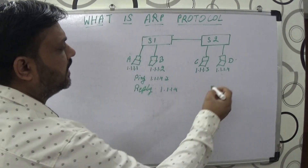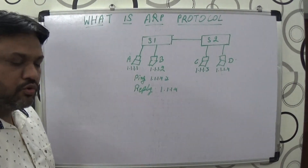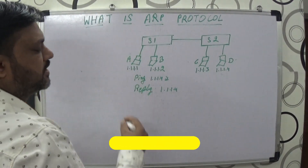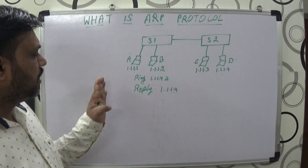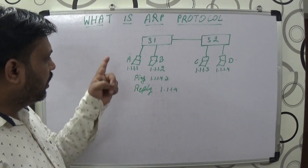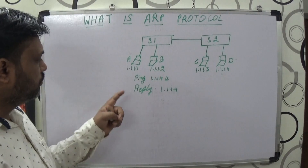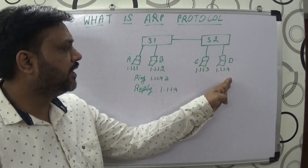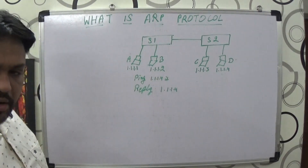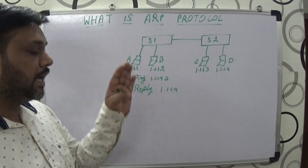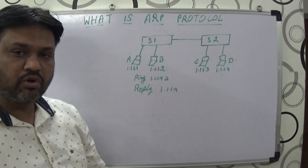But how does the ping command come to know about this computer? How does computer A or switch number one or switch number two know that the computer we are trying to reach is available on switch number two? Here comes the ARP protocol, because ARP protocol is the protocol which helps to identify where the destination is and whether it is available in the network.